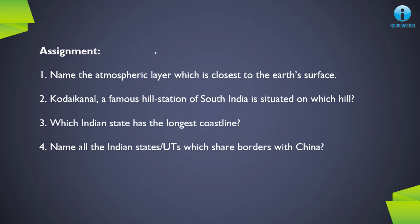Now we have some assignment questions. Please tell me: first, the name of the atmospheric layer which is closest to the Earth's surface; second, Kodaikanal, a famous hill station of South India, is situated on which hill; third, which Indian state has the longest coastline; and fourth, name all the Indian states and union territories which share borders with China. Please answer these in the comments and I'll tell you the correct answers.